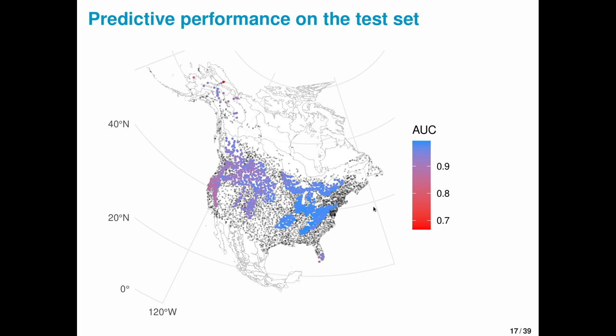Predictive performance on a withheld test set was pretty good, particularly in the eastern U.S. where we have a high density of data. It was not so great in the northernmost breeding bird survey routes in Alaska; we don't have as much spatial information to borrow.